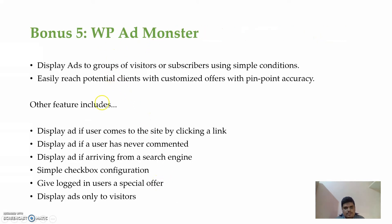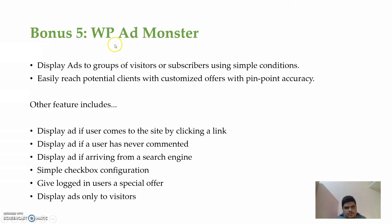Bonus number five is WP Ad Monster, which displays ads to groups of visitors or subscribers using simple conditions. You can easily reach potential customers with customized offers with pinpoint accuracy. Features include: display an ad if a user arrives by clicking a specific link, display an ad if the user has never commented, display if arriving from a search engine, simple configuration, and giving locked-in users a special offer.